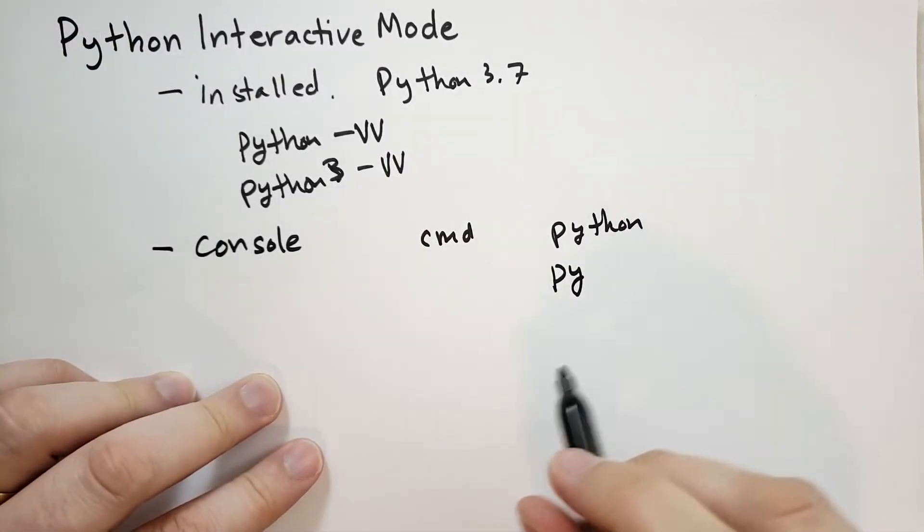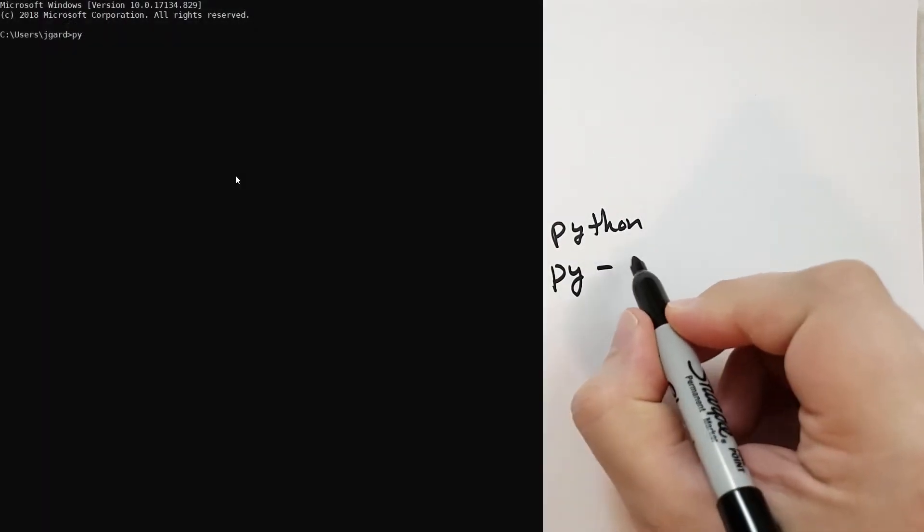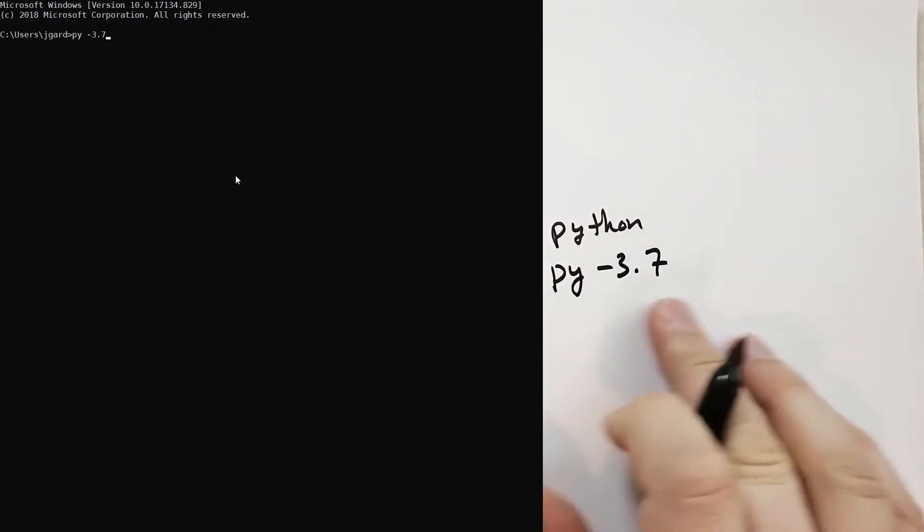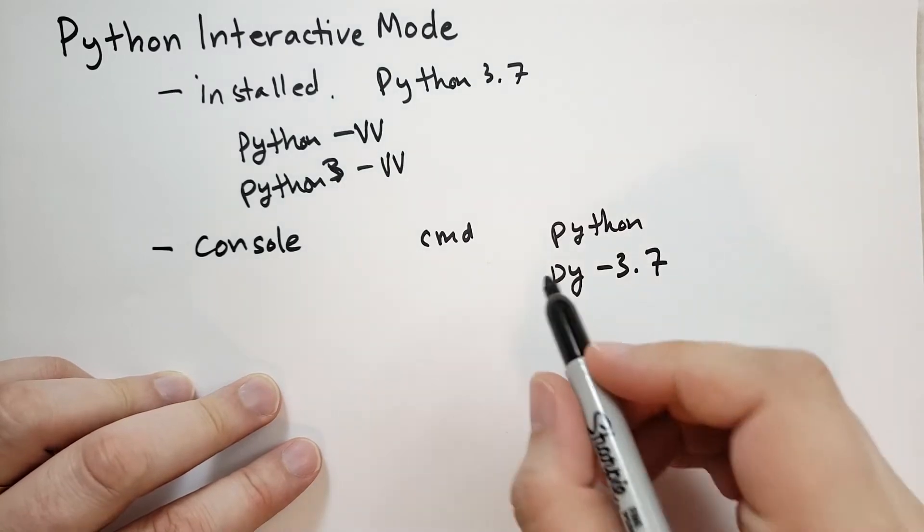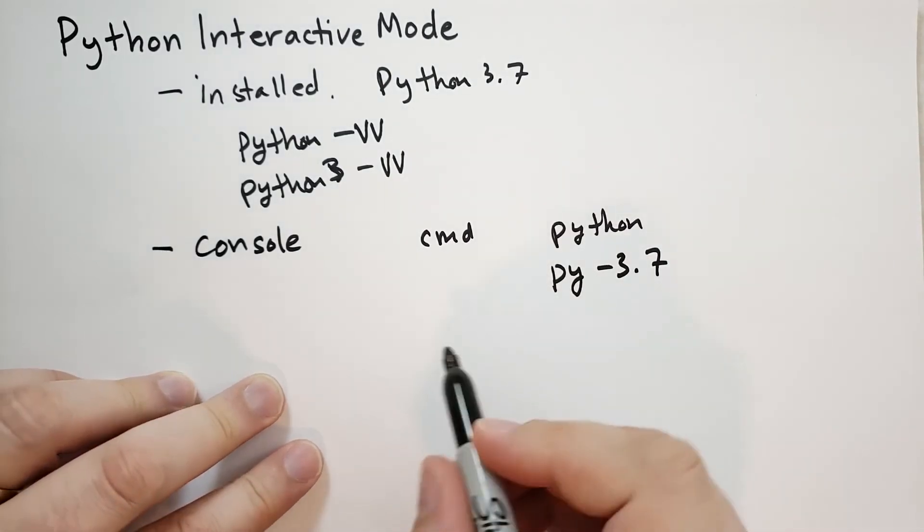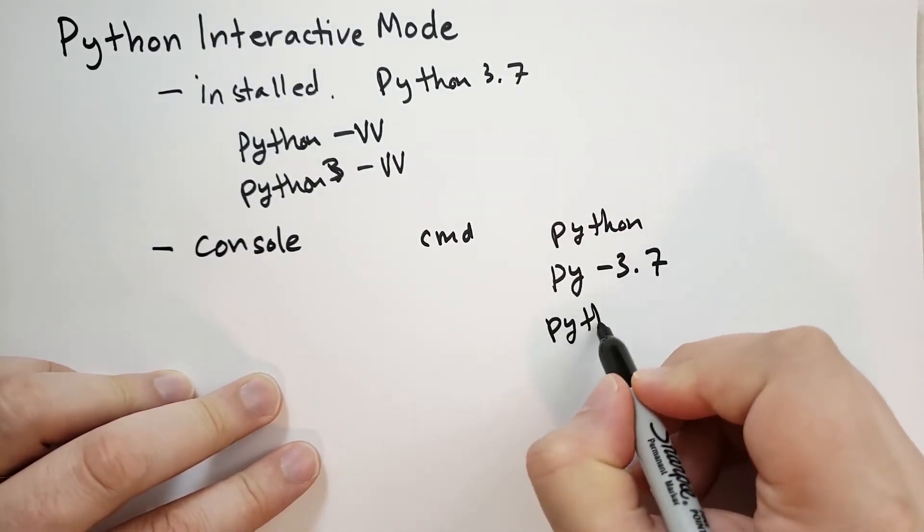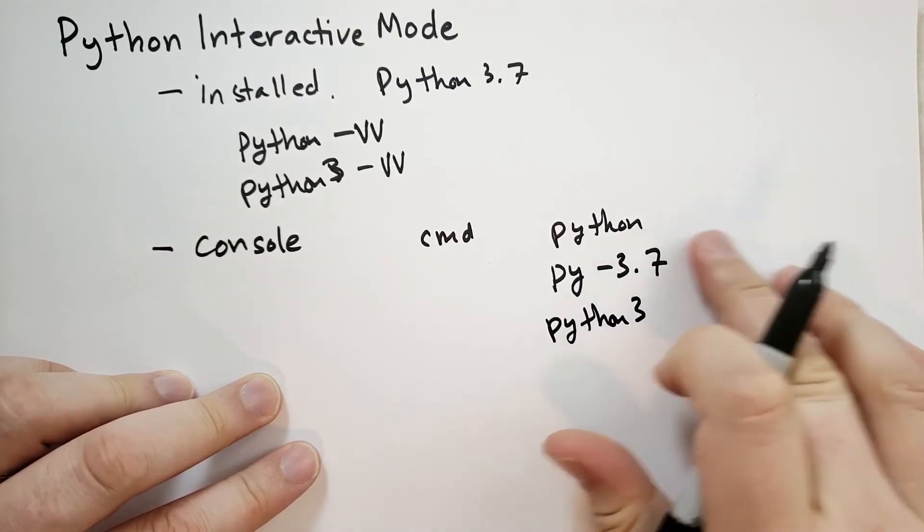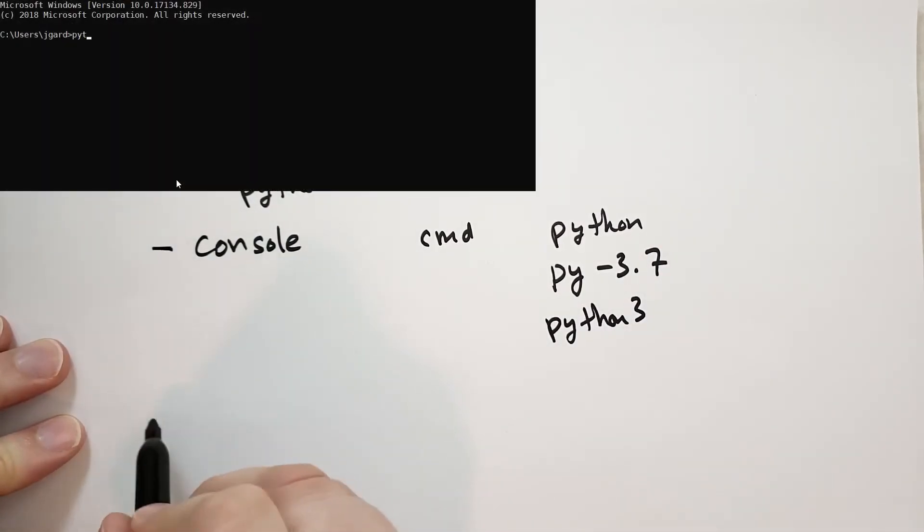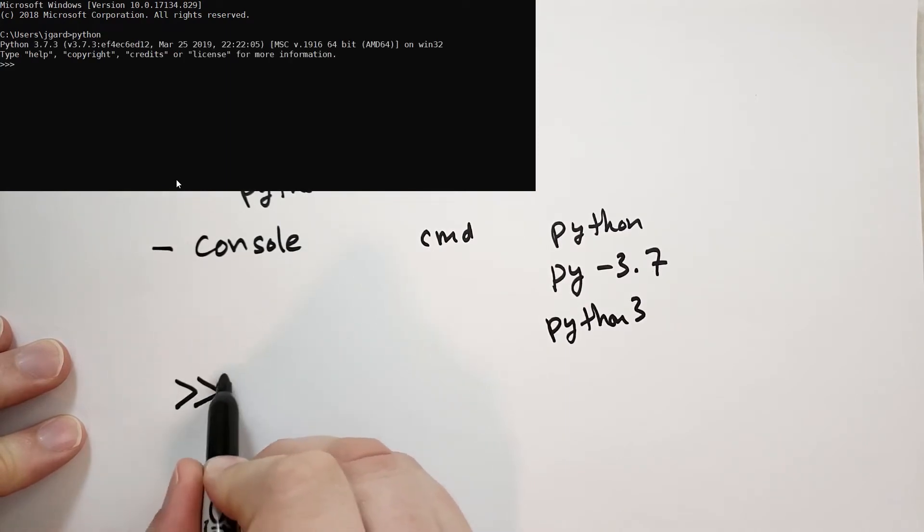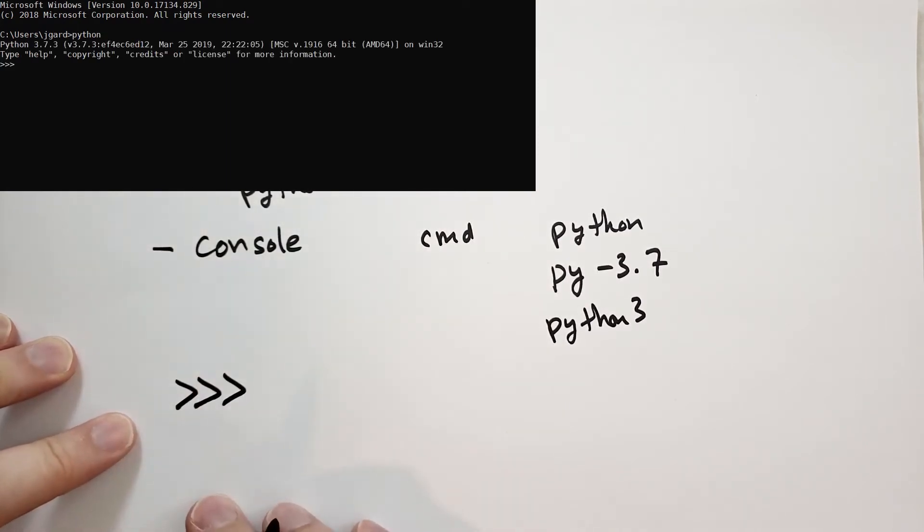You can also use the PI program if you have multiple versions installed, and I believe the way this works is you do PI dash 3.7 and it'll bring up Python 3.7 for you. On Linux Mac OS, same kind of thing, but you might have to run the command Python 3 with no parameters. It'll bring it up right away. You should see in your screen three greater than signs after a brief message about the version of Python that you're running.